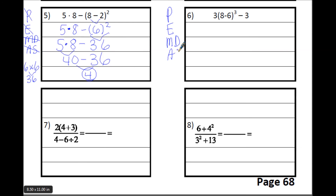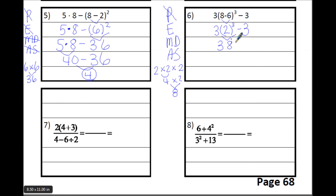Rewrite PEMDAS — do this for every single problem. There's only one thing to do inside the parentheses: 8 minus 6 is 2. Write that, and make sure you don't forget the exponent. That exponent is the next thing: 2 to the third power is 2 times 2 times 2 — the exponent is your counter. 2 times 2 is 4, times another 2 is 8. Write the 3 down but it means multiplication — put parentheses so it doesn't look like 38. 3 times 8 is 24, then subtract the last 3 to get 21 — final simplified answer.